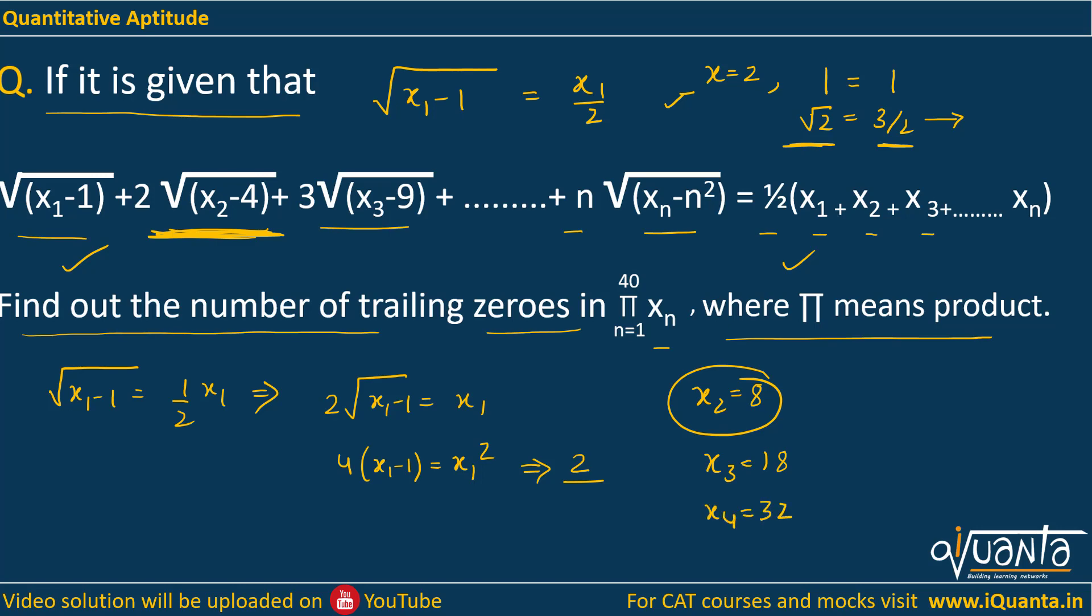Let us find out if there is a trend between the values of x₁, x₂, x₃, x₄. We are getting 2, 8, 18, 32. We can write this as 2×1², then 2×2², 18 is 2×3², 32 is 2×4². So we can say that the 40th term would be 2×40².